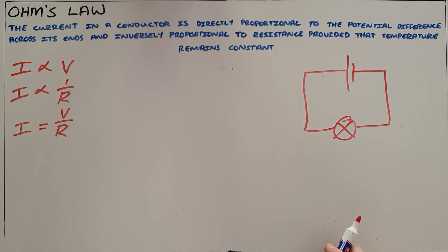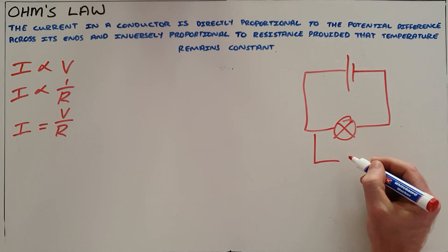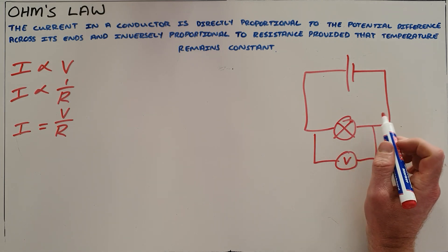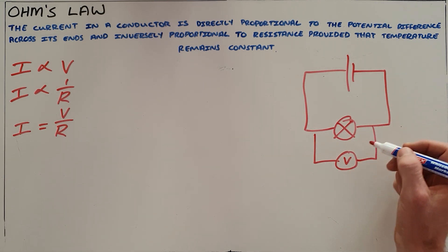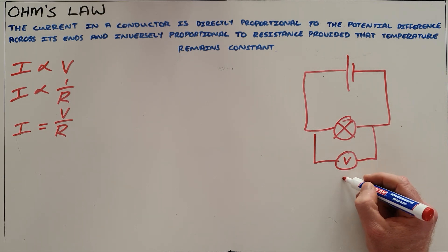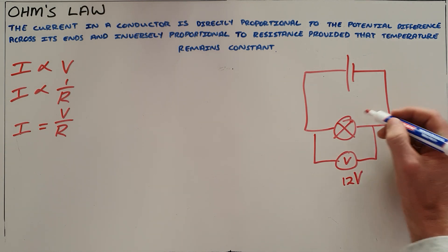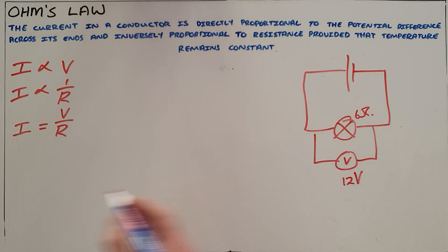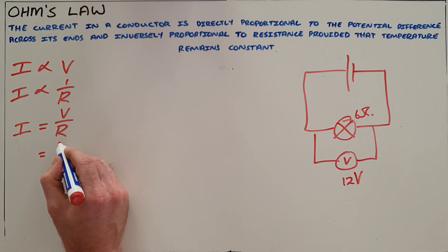What that allows us to do is if we know the voltage over a conductor and we know the resistance of that conductor, we can calculate the current passing through it. So if this voltmeter here measures 12 volts and we know that this is a 6 ohm light bulb, then we can say the current passing through that light bulb must be 12 over 6, must be 2 amps.